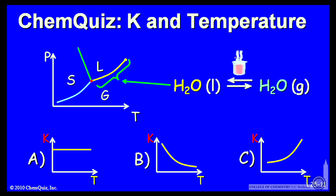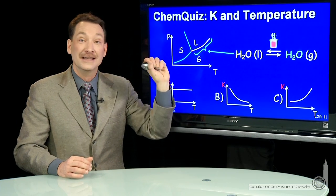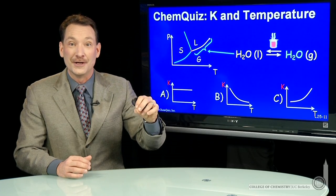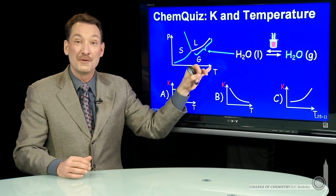if we looked at a phase diagram and said, what are the points on this line that separates liquid and gas? At every point on this line, liquid and gas are in equilibrium. And this is varying with temperature.